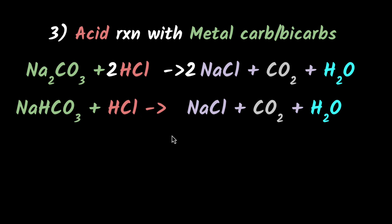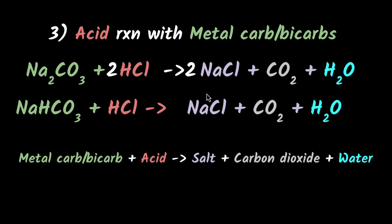So in general, what happens when metal carbonates or metal bicarbonates react with acids? They will react to give you a salt, just like before. But this time, you also get carbon dioxide and water, because the H+ ions react with the carbonates and bicarbonates to give you those products.